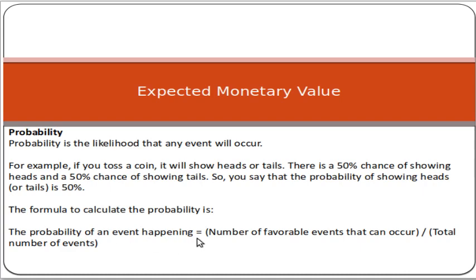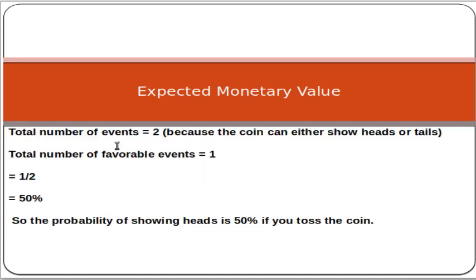The formula to calculate probability is: the number of favorable events divided by the total number of events. For the coin toss, the total number of events is 2 (head or tail) and the favorable event is 1 (either head or tail). So 1 divided by 2 equals 50%. That is how you calculate probability.